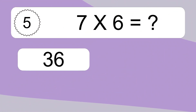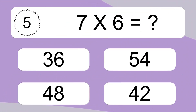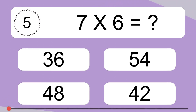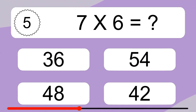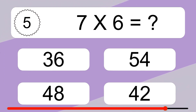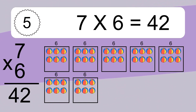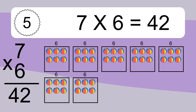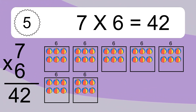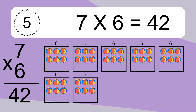7 times 6 equals what? 7 times 6 equals 42. We have 7 boxes and each box has 6 colorful balls inside. If you count all the balls in all the boxes together, you will have 7 times 6 balls. This equals 42 balls.